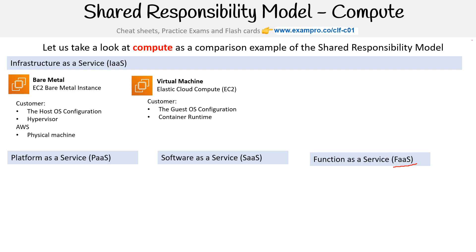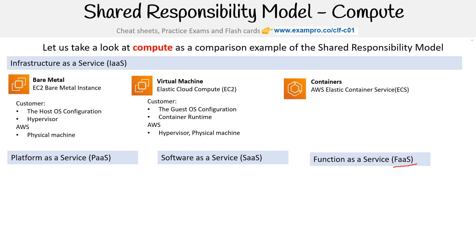Then there's the container runtime. You can install Docker or any kind of container layer that you want on EC2. So that's another thing you can do. AWS is going to be responsible for the hypervisor, the physical machine, and the host OS.